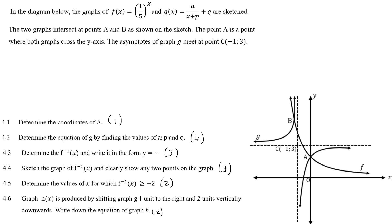In the diagrams below, we've got an exponential which is f, and we've got g which is a hyperbola. So we've got f which is the exponential over here, and then we've got g which is a hyperbola. It says the two graphs intersect at a and b. The point a is where both graphs cut the y-axis. The asymptote meets point c at negative one and three. We know that point c is where the asymptotes meet.